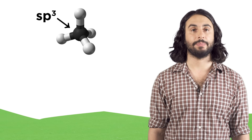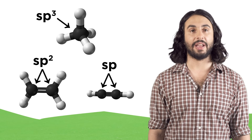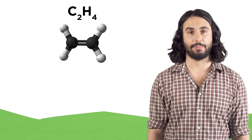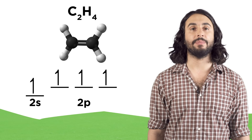But carbon can also be sp2 or sp hybridized. An sp2 carbon has just three electron domains, which can happen if it has a double bond to something. Take C2H4 for example — each of these carbons is sp2 hybridized because of the double bond present. What this means for molecular orbitals is that the carbon will promote one electron and then take its 2s orbital and just two of the 2p orbitals to generate the sp2 hybridized orbitals.